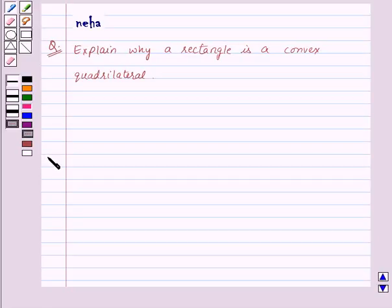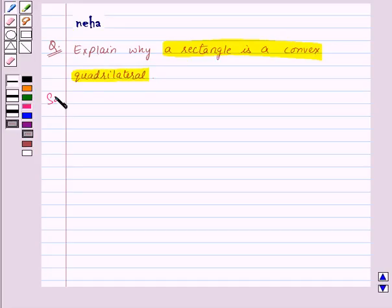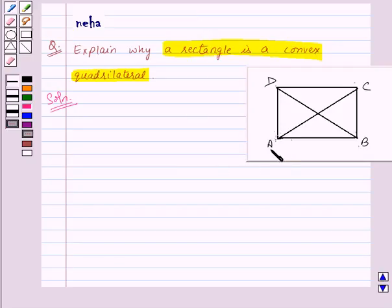Hi and welcome to the session. Today we will discuss the following question: Explain why a rectangle is a convex quadrilateral. Let's see its solution. Here we have a rectangle ABCD.